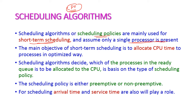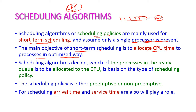Single core processor. The main objective of short-term scheduling is to allocate CPU time to processors in an optimized way. After creating a process, it will wait in a ready queue. The scheduler will select the best process for CPU execution. Hence, we need to design the process in an optimized way.